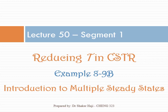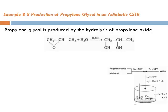We are still trying to reduce the temperature in the CSTR used in Example 8.8. We tried doing so in Example 8.9a in the previous lecture, and in today's lecture we're going to continue our trial - it's going to be Example 8.9b.